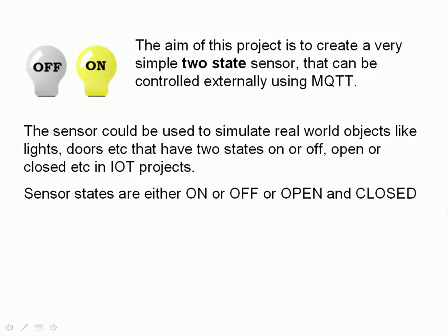The sensor can be used to simulate real-world objects like lights, doors, etc. — anything that has two states, on or off, open or closed, in IoT/MQTT projects. For our sensor the states are going to be on and off, or open and closed.